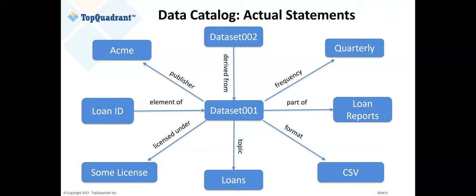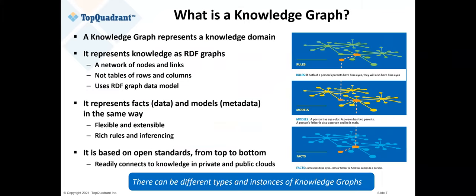The next question is: what is a knowledge graph? That's what Top Quadrant does — our software is all based on knowledge graph semantic web standards. The best way to answer this is to say you'll want to do all of those previous steps I used as an example of building up a data catalog; it's just that you've decided to do it as a knowledge graph, using semantic graph standards to formally describe your assets.